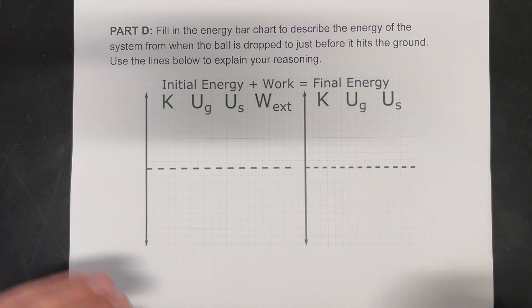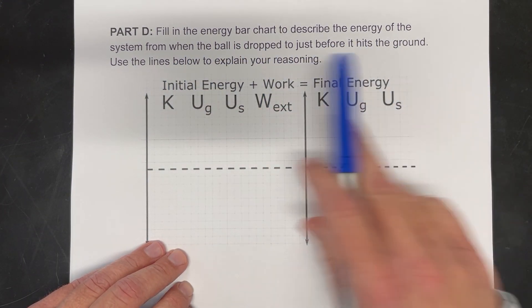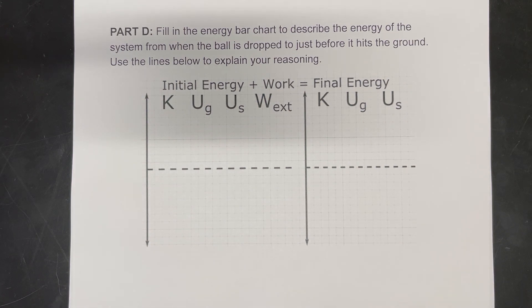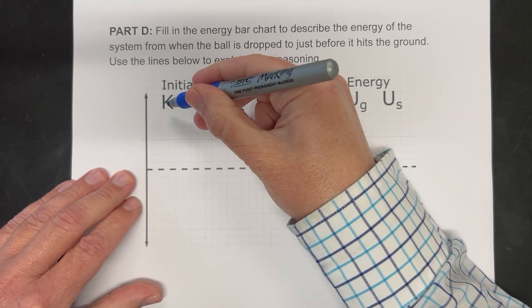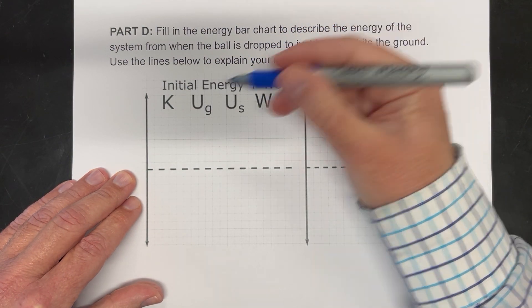So next part here, it says fill in the energy bar charts to describe the energy of the system when the ball is dropped just before it hits the ground. Use the lines below to explain your reasoning. So on this one, it's at rest in the beginning, so it has no kinetic energy. There's no spring in this problem, so there's no spring energy.